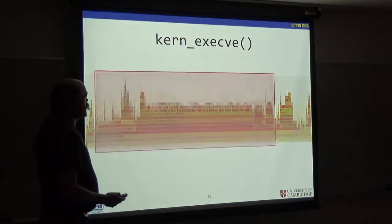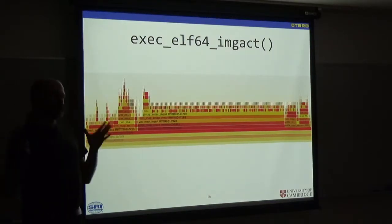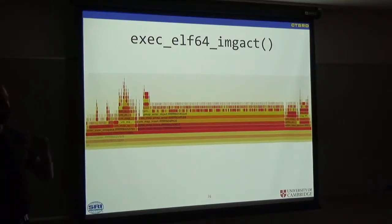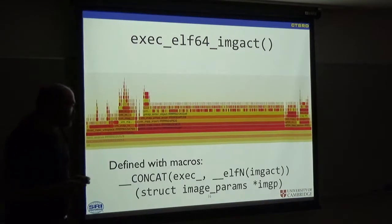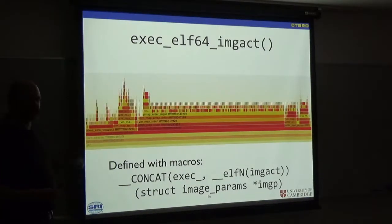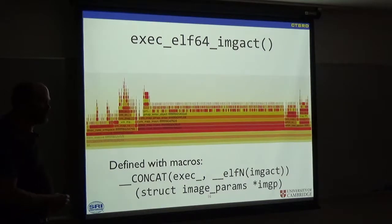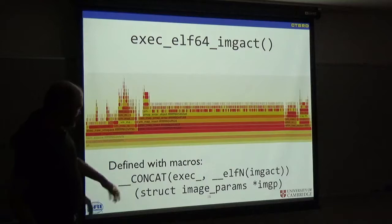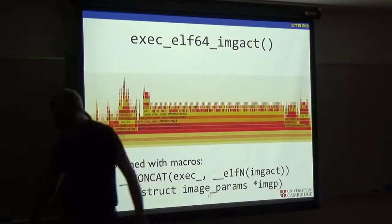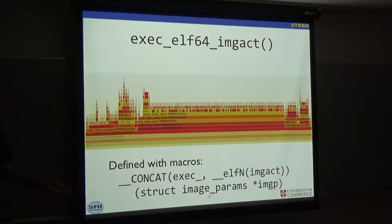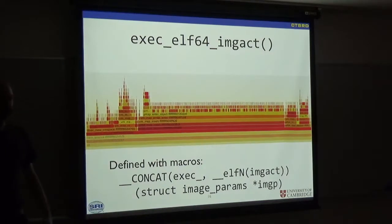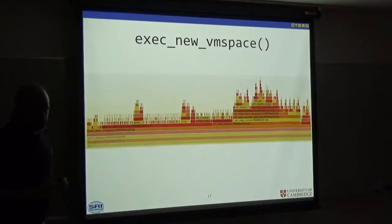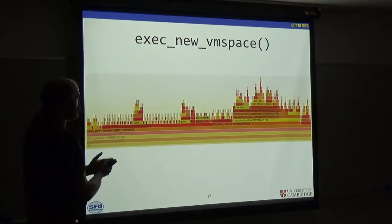Now, we're going to jump into the exec_elf_imgact. This runs ELF64 format binaries. One interesting thing about this function is if you try to find it in the kernel, you will not find it. That string does not exist, except in the cloud kernel, because this is the declaration. This ELFN macro in particular is very useful. It means that our 32-bit, 64-bit ELF code is the same code.